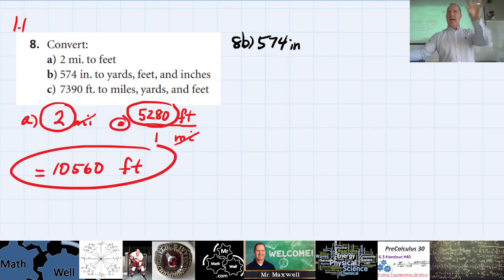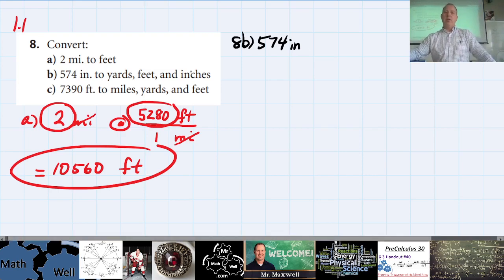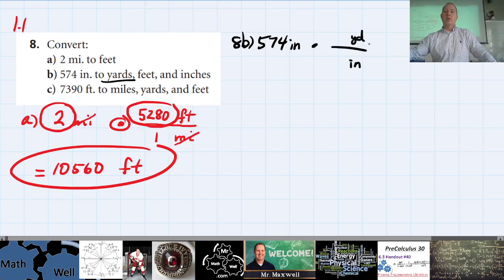Let's tackle this in pieces. First, find out how many yards there are, since yards are the biggest unit. Put inches on the bottom, yards on top. We know there are 36 inches in one yard, so let's figure out how many exact yards we get.